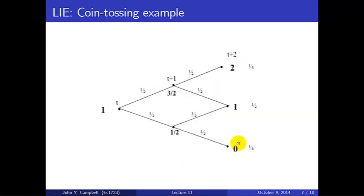Now let me give you an example of this in the context of a simple coin tossing example. We've talked about this one before. We're going to toss two coins. Time t is before we toss any. Time t plus 1 is after we've tossed one coin. And time t plus 2 is after we've tossed two coins. And we're going to count the number of heads we get. We're going to get either two heads, one head, or zero heads. This is the event tree.